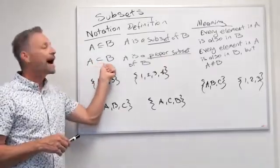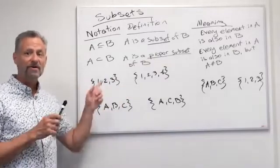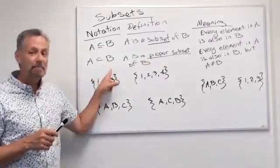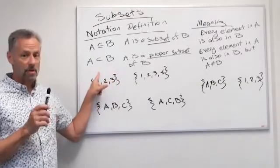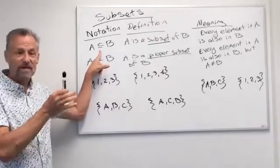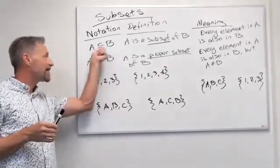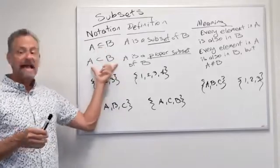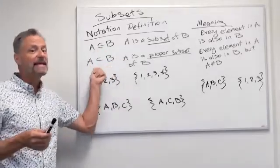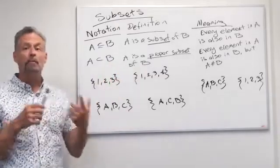The notation without the equals means A is a proper subset of B. So every element in A is in B, but they're not equal. Kind of like a less than or equal sign—we can take the equal sign away if there's not an equals. Same idea. We take away that line if A can't equal B, so everything in A is in B, but they're not the same set. That would be a proper subset.